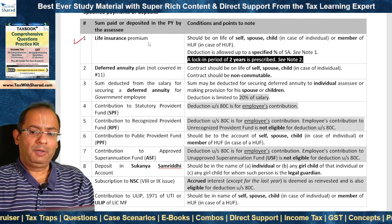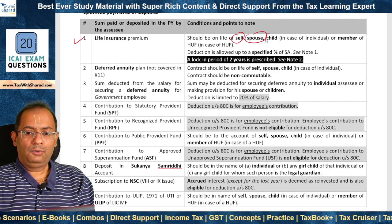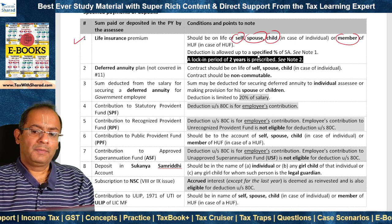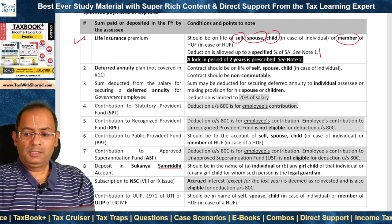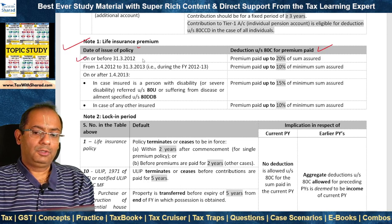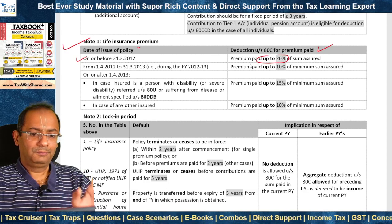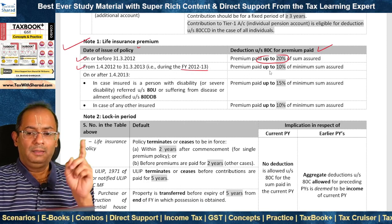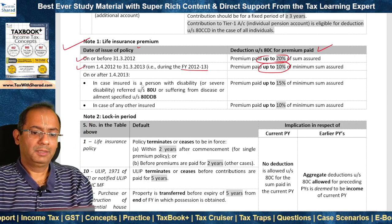The first specified payment is life insurance premium. The insurance should be on the life of either self, spouse, or child in the case of an individual, or a member of HUF in the case of an HUF assessee. Deduction is allowed up to a specified percentage of sum assured. For policies issued on or before 31st March 2012, deduction is allowed for premium paid up to 20% of sum assured. For policies issued during 2012–13, deduction is allowed up to 10% of minimum sum assured.